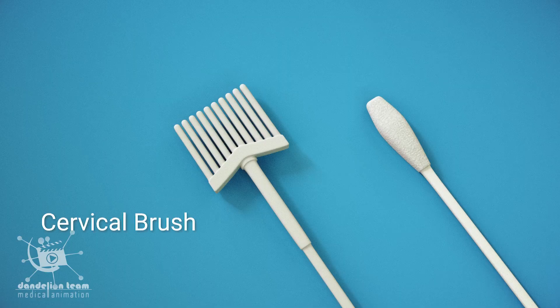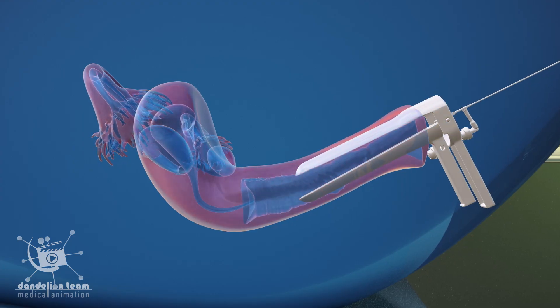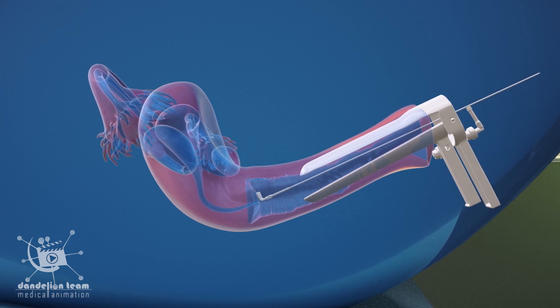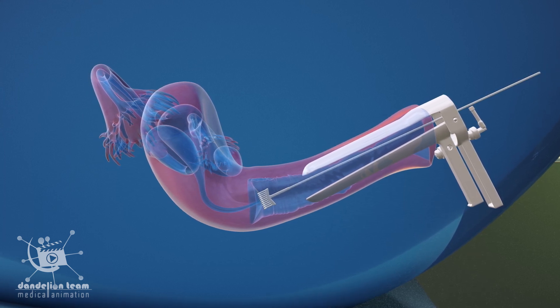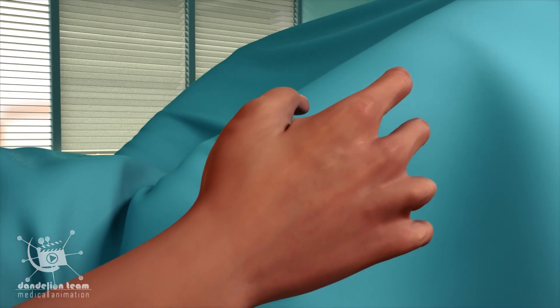A cervical brush or cotton swab is used to scrape some cells from the walls of the cervix gently. You may experience slight discomfort during the collection process.